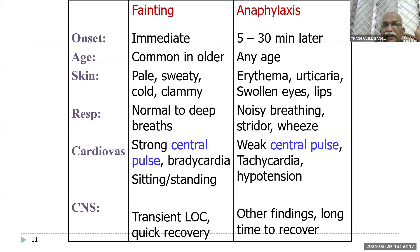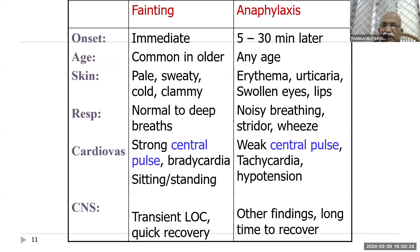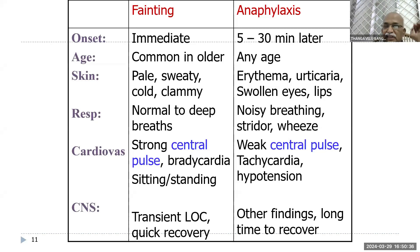You might ask whether it is anaphylaxis or just a fainting attack. These are the differences: a fainting attack happens immediately, but anaphylaxis happens about 5 to 30 minutes after exposure. In anaphylaxis, there will be erythema, urticaria, swollen eyes and lips. In fainting, the skin will be pale, sweaty, cold, and clammy. In anaphylaxis, there are weak central pulses, tachycardia, and hypotension — all these features suggest we are managing a child with anaphylaxis.